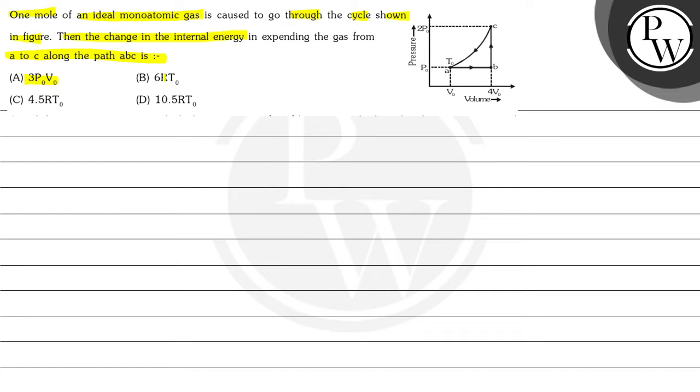Options are 3P₀V₀, 6RT₀, 4.5RT₀, and 10.5RT₀. Here a figure is given and in this figure we can see that the pressure range is given 2P₀ and P₀ and volume range is V₀ and 4V₀.